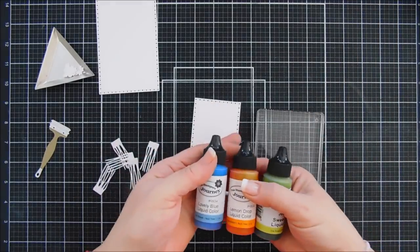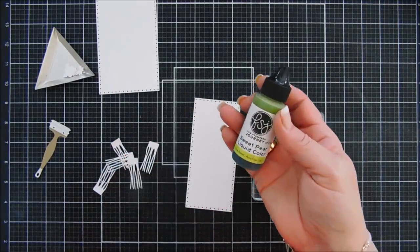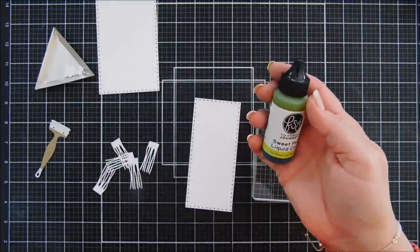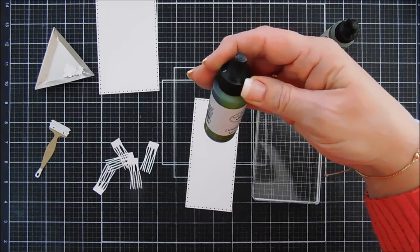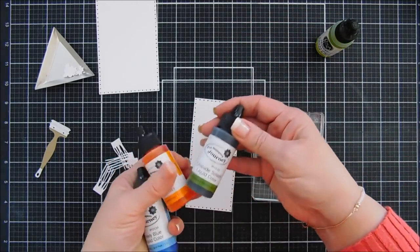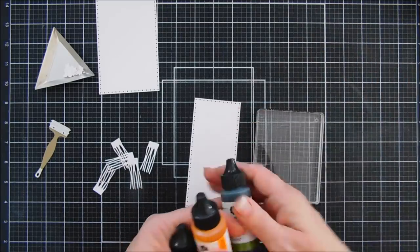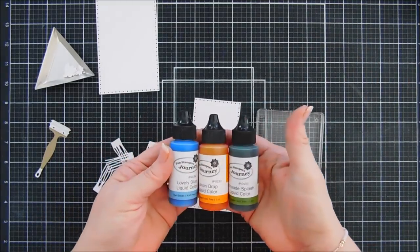But I chose three colors. I have a blue, which is lovely blue. Lemon drop, this is yellow. And then sweet pear. Maybe limeade splash would be better. Let's do the, oh, I'm going to do limeade splash instead of the sweet pear. Maybe get a brighter, brighter color. So these three colors.